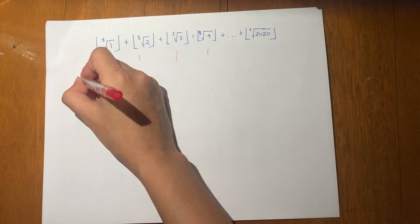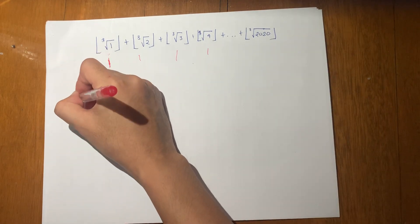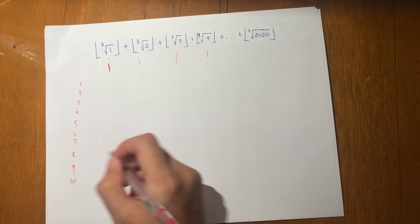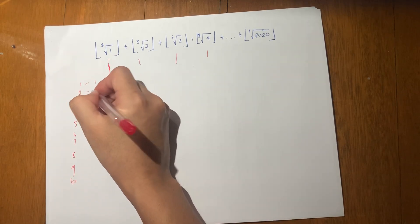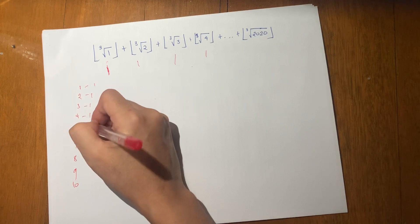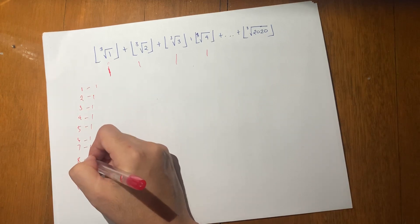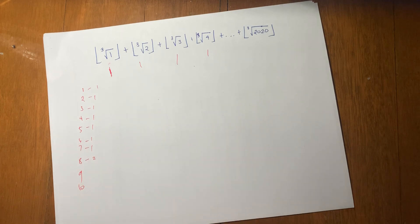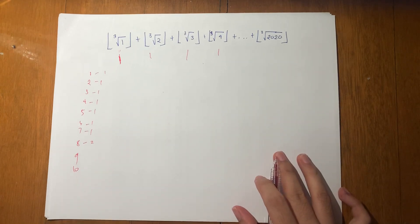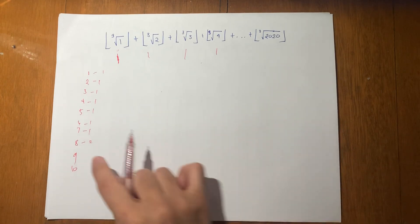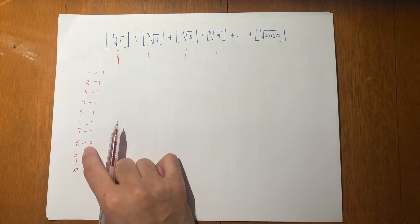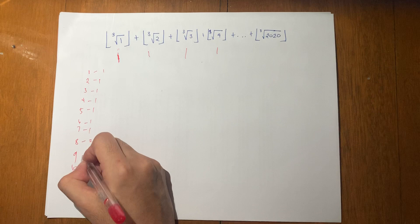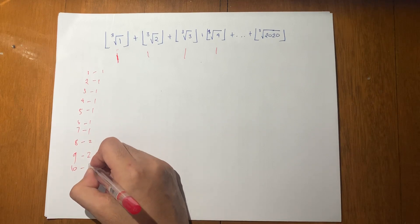So if we list the numbers 1, 2, 3, 4, 5, 6, 7, 8, 9, 10 — for 1 through 7, the floor value is 1. But for 8, the floor is 2. Why? Because the cube root of 8 is 2. Anything higher than 8 should have a floor of at least 2. The floor of the cube root of 9 is also 2, and for 10 it is also 2.